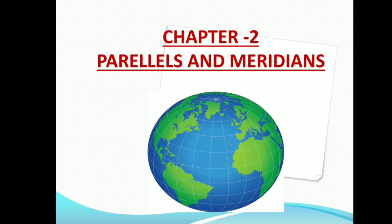What are imaginary lines? Imaginary lines are a number of horizontal and vertical lines all over the globe or a map, and these lines help us to find the exact location of a place on a globe or a map. Imaginary lines that run from east to west are called lines of latitude or parallels, and those that run from north to south are called lines of longitude or meridians.